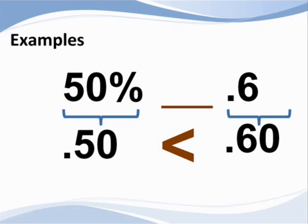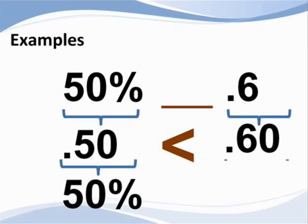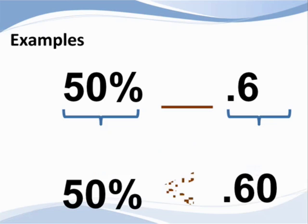If 50 hundredths is smaller than 60 hundredths, the comparison symbol points to the smaller number. So we know that 50% is smaller than 6 tenths.